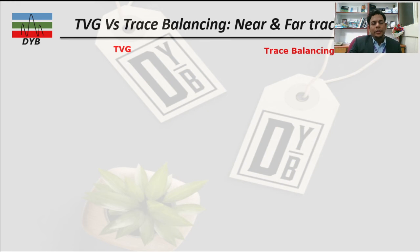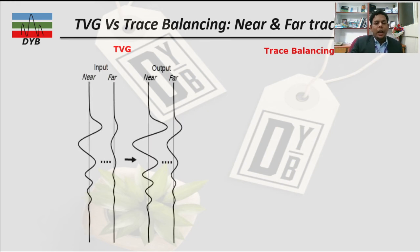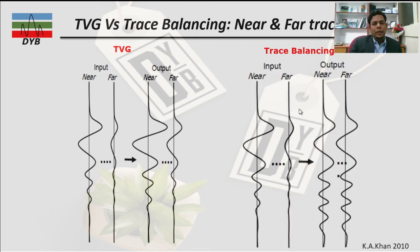Comparing time variant gain versus trace balancing: in time variant gain, you get enhancement of amplitude for near and far traces, but the relative amplitude is not equalized — the far trace is still not as good as the near one. In trace balancing, you can achieve the maximum amplitude equal to the near offset for all traces. On the left side you have TVG and on the right side trace balancing.